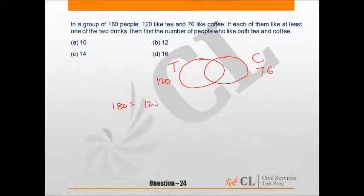So 180 would be equal to 120 plus 76 minus the number of people who like both tea and coffee, because if it is x then it would be 120 minus x and 76 minus x.